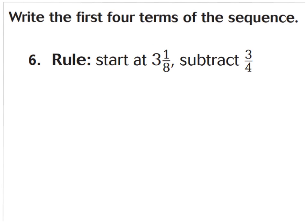Now let's try another sequence — finding the first four terms, but this time our rule says to subtract 3 fourths. Let's make four lines to find the first four terms, starting with 3 and 1 eighth as our first term. My rule says to subtract 3 fourths, and as you can see, my denominators are different. We need to make them alike before we can subtract.